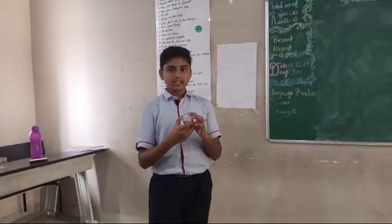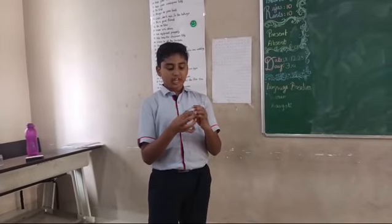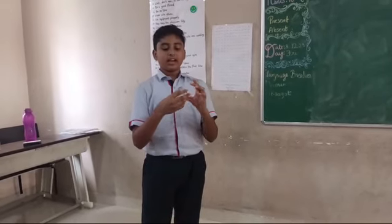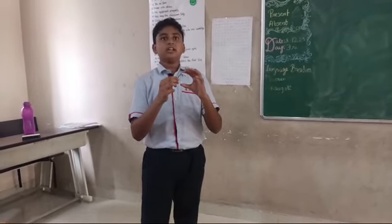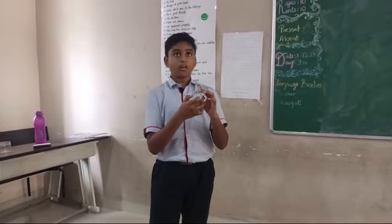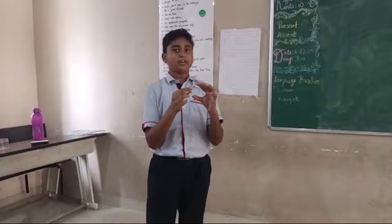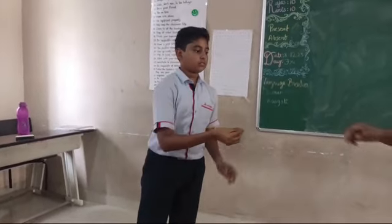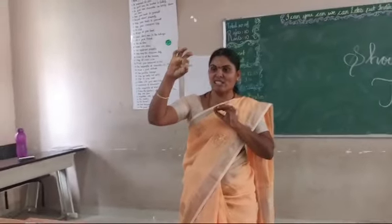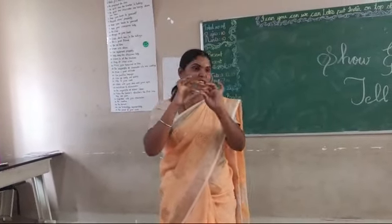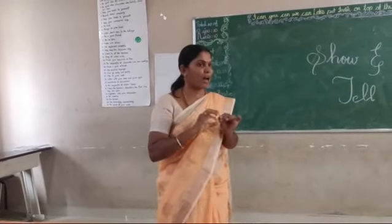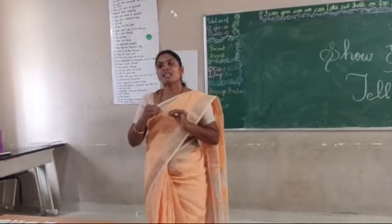This is a concave lens. It is thin at the center and thick at the edges. It is used in the correction of short-sightedness, or myopia. It is also called a negative lens and is known as a diverging lens.